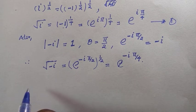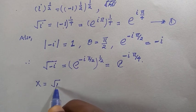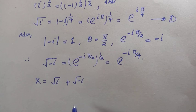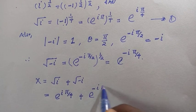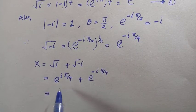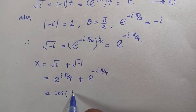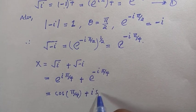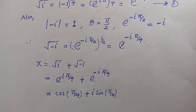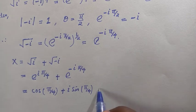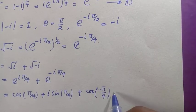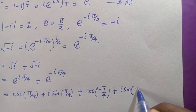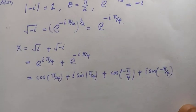Going back to the equation x = √i + √(-i), we replace with what we found: x = e^(iπ/4) + e^(-iπ/4). Writing these in polar trig form using Euler's formula, the first term is cos(π/4) + i·sin(π/4), and the second term is cos(-π/4) + i·sin(-π/4).